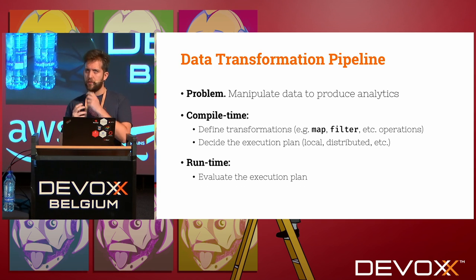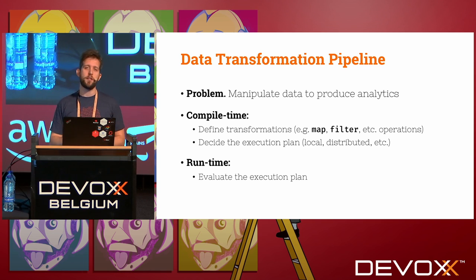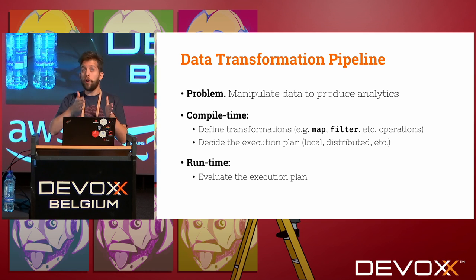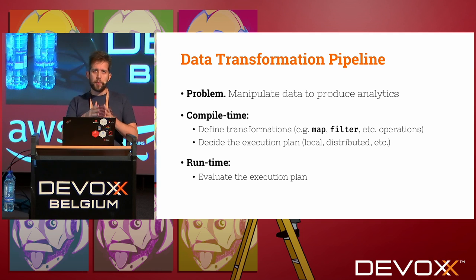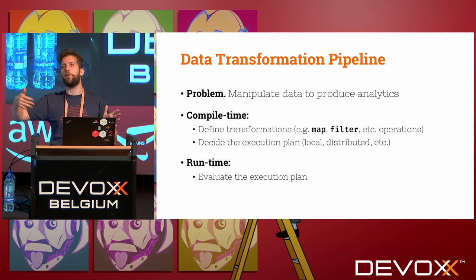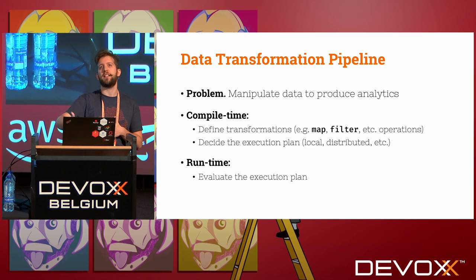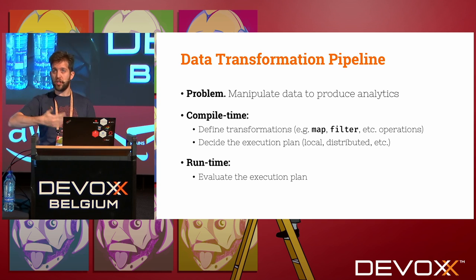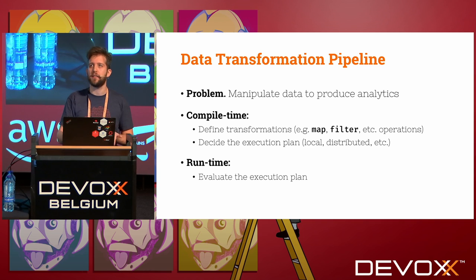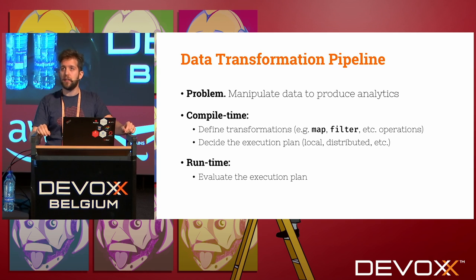A better example: a data transformation pipeline using Spark. You describe a data transformation by concatenating operations — map, filter, collect. When you describe these operations and then execute them, there's an execution plan being generated. The generation of the execution plan is the compilation phase: the phase where we decide where the actual computation will be done. Once decided, you just execute.